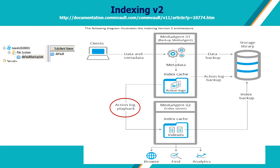Action logs are files containing metadata that are created during the data backup process. Action logs are subsequently played back to create one or more indexes. This metadata is useful because it allows certain processes to obtain information about backed up files without searching through the actual backup itself. Index backup is the process by which a full index is copied to a storage library and retained according to system rules. Each index backup can be used to recover an index in the event that the active index becomes corrupted or is unintentionally deleted. The index is a database containing the metadata for backed up data, and is created during the data backup process by playing action logs to it.